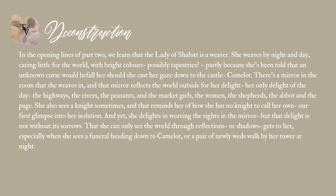There is a mirror in the room where she weaves, and that mirror reflects the world outside for her delight — her only delight of the day. The highways, the rivers, the peasants and the market girls, the women, the shepherds, the abbot and the page. She also sees a knight sometimes, and that reminds her of how she has no knight to call her own — our first glimpse into her isolation. And yet she delights in viewing the sights in the mirror, though that delight is not without its sorrows. That she can only see the world through reflections or shadows gets to her, especially when she sees a funeral heading down to Camelot or a pair of newlyweds walk by her tower at night.